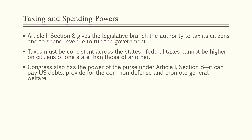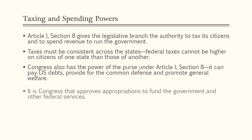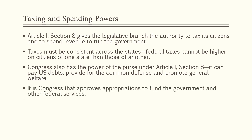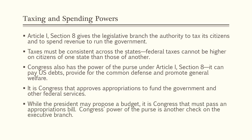Congress also has the power of the purse again under Article 1, Section 8. That means it can pay U.S. debts, provide for the common defense, and promote general welfare. It is Congress that approves appropriations to fund the government and other federal services. While the president can propose a budget, it is Congress that must pass the appropriations bill — they don't have to use the president's proposed budget; in fact, they can ignore it completely. Congress's power of the purse is another check on the executive branch.